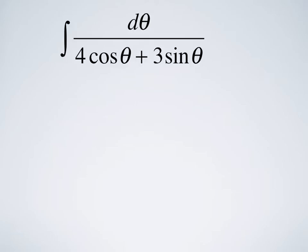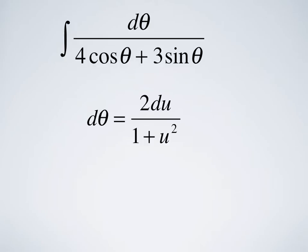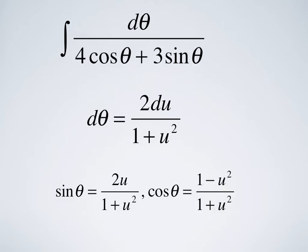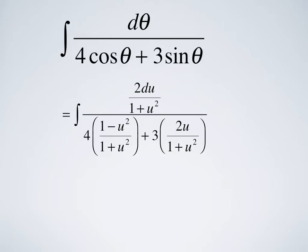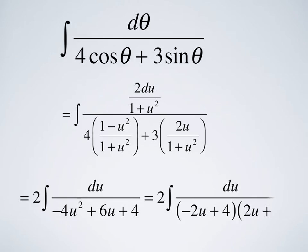We've got the integral of dθ divided by 4cosθ + 3sinθ. The first step is to write down what dθ is: 2du/(1+u²). Then we replace sinθ = 2u/(1+u²) and cosθ = (1-u²)/(1+u²). When you do that, you get a horrendous mess: the integral of 2du/(1+u²) divided by 4(1-u²)/(1+u²) + 3·2u/(1+u²). After algebra, you get 2 times the integral of du over -4u² + 6u + 4.